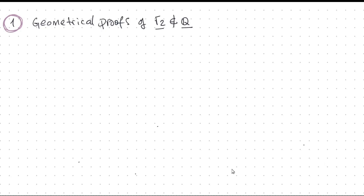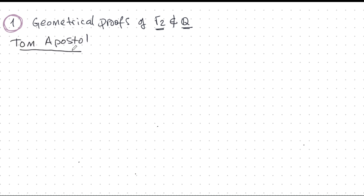In the last video, we saw a geometrical proof that root 2 is irrational. You would think that such a proof was known to the ancients — after all, it was geometry. But actually, it was not an ancient proof. It was by none other than Tom Apostol.